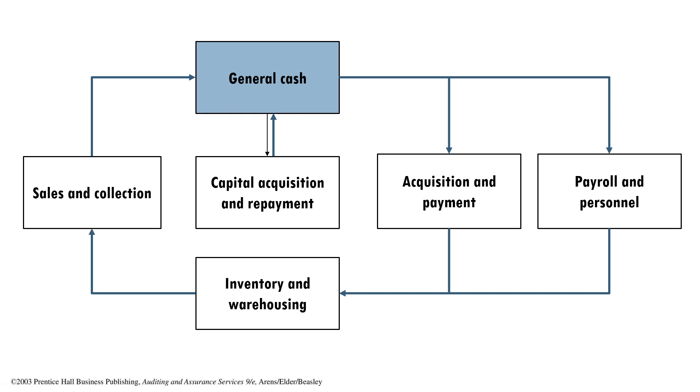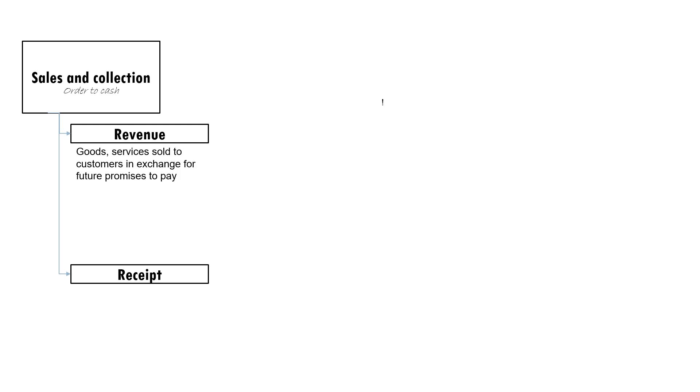These are the common transaction cycles in a business. What we're going to do next is take a look at each of these cycles and point out their salient features. Let's start with sales and collection. If we go through the CPA licensure exam syllabus in the Philippines, the sales and collection cycle is referred to as order to cash. In most literature, this was actually called the revenue and receipt cycle — revenue referring to how goods and services are sold to customers in exchange for future promises to pay, and receipt referring to cash collected from customers.